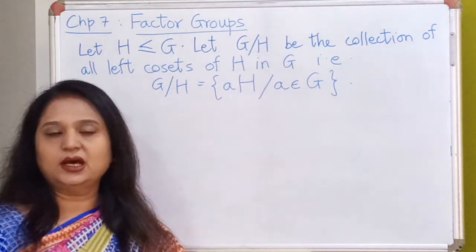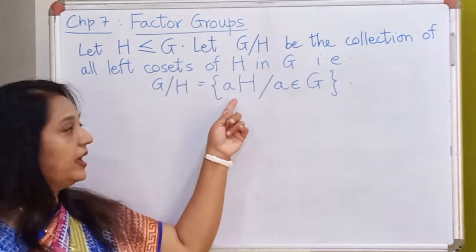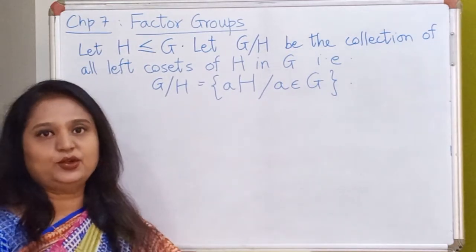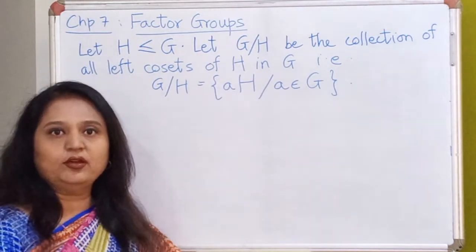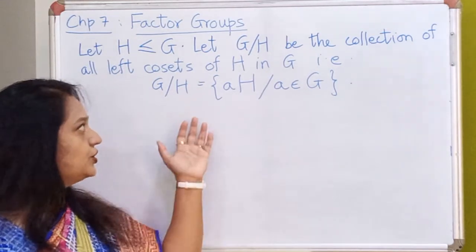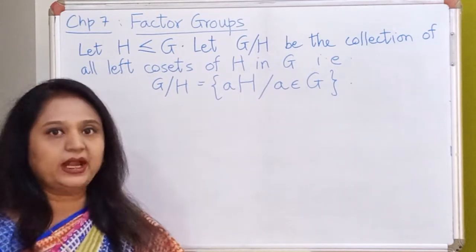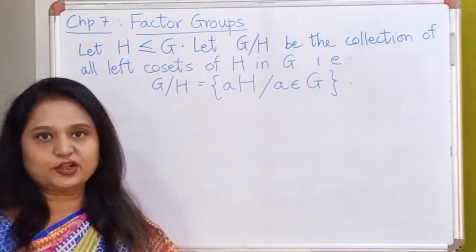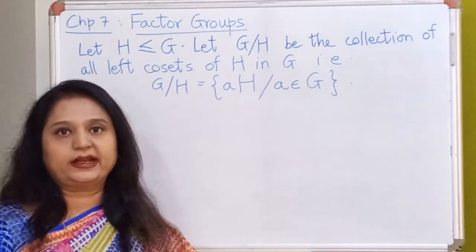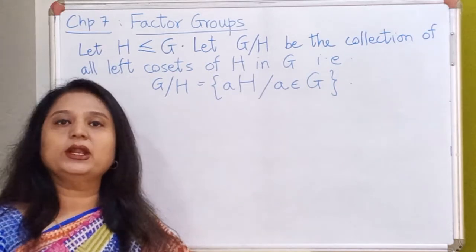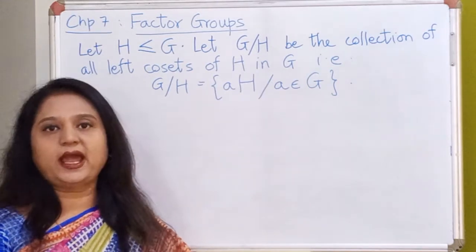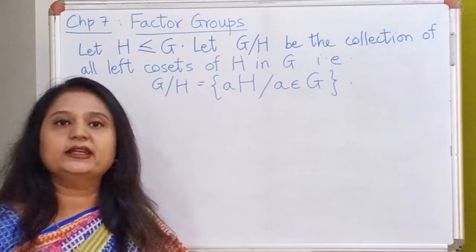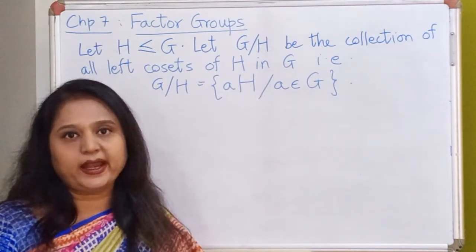Notice that this is a fairly complicated set by itself, because every element in this set is itself a set. So it is not an easy set to deal with. We will have to be very careful whenever we are doing some operation or dealing with the elements of this set. Now we are going to study factor groups by taking left cosets, but it is equally okay to take right cosets. A little later I will tell you why it does not matter whether you take left cosets or right cosets.